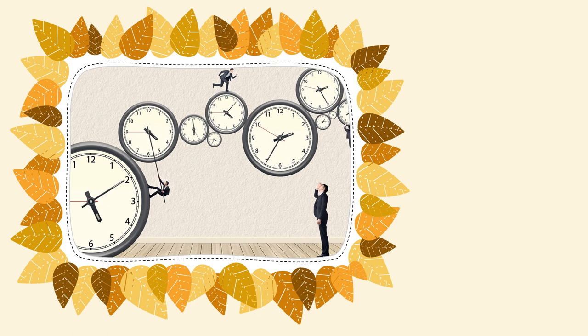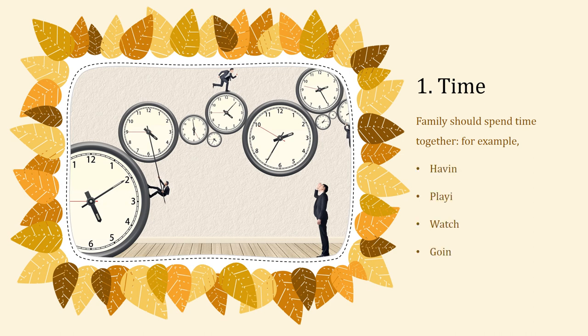Time — the family should spend time together. For example, having meals together. Sharing breakfast, lunch and dinner with your family members will give you the opportunity to spend more time together. You will be able to learn polite table manners, and parents will have a chance to be role models for their children. And so, the family ties will be strengthened.